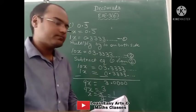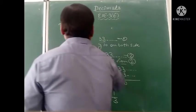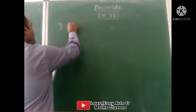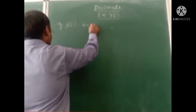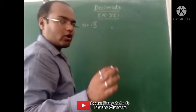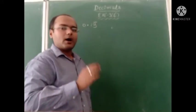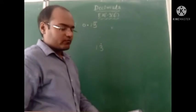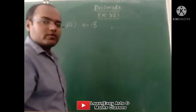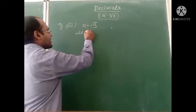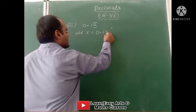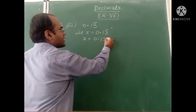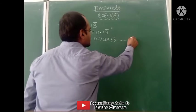Now see Part number 3. The recurring decimal given is 0.13 with a dot on 3. We put bar on 3 instead of dot, because dots are sometimes not visible. So the question is 0.13 bar. We assume this recurring decimal is the value of x. x equals 0.13333 and so on. This 3 has bar, meaning it is repeating again and again. This is equation number 1.